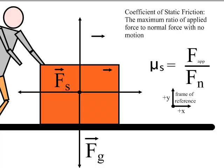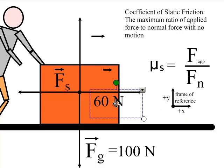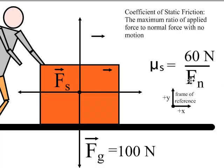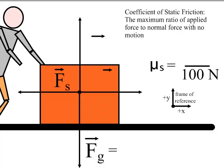So, for example, if the force of gravity on an object was equal to 100 newtons, and the applied force was 60 newtons, then my equation would end up looking like this. And ultimately, my coefficient of friction would look like this. It would be 0.6.